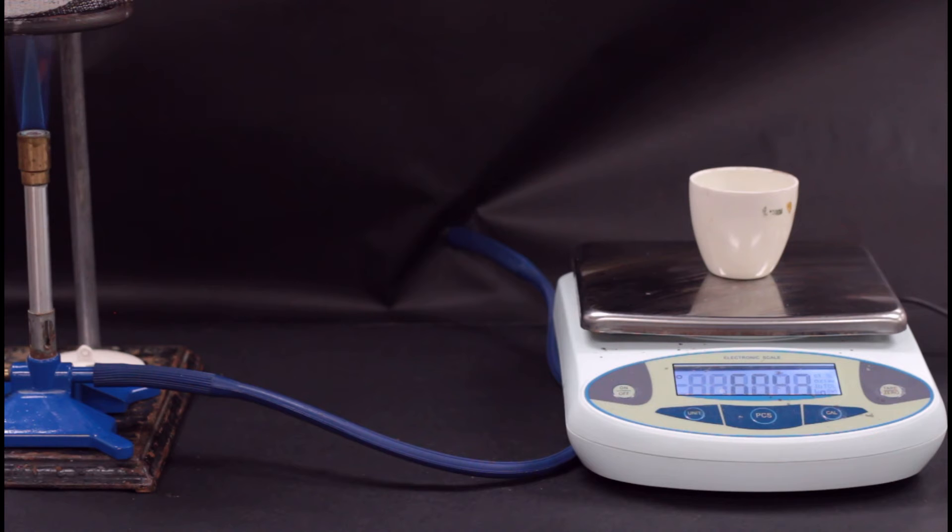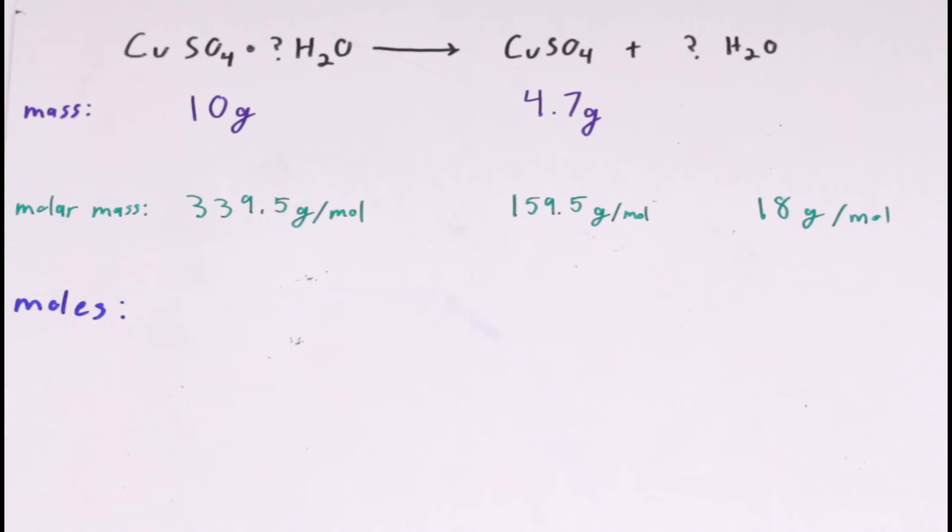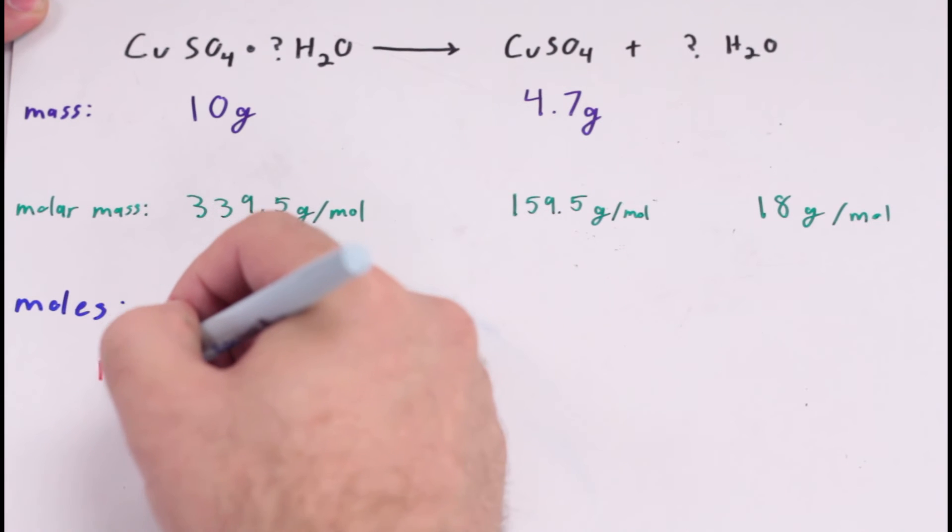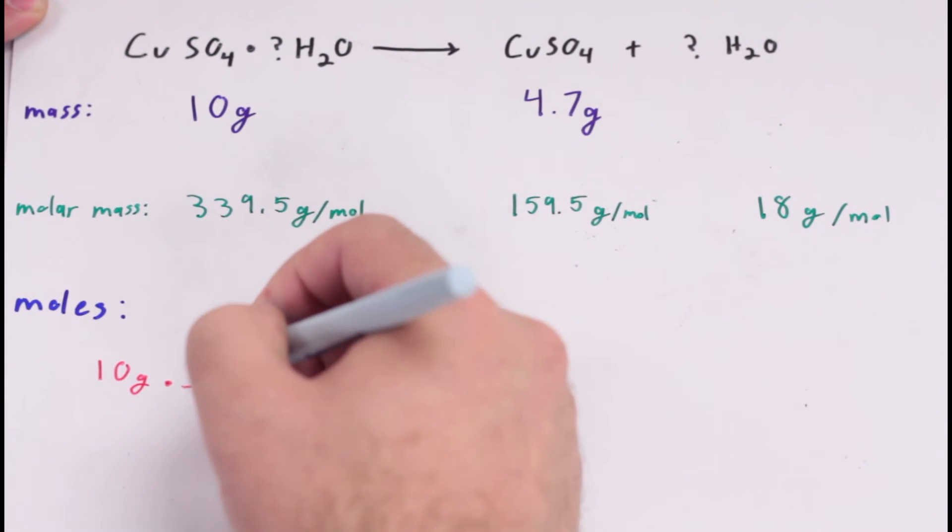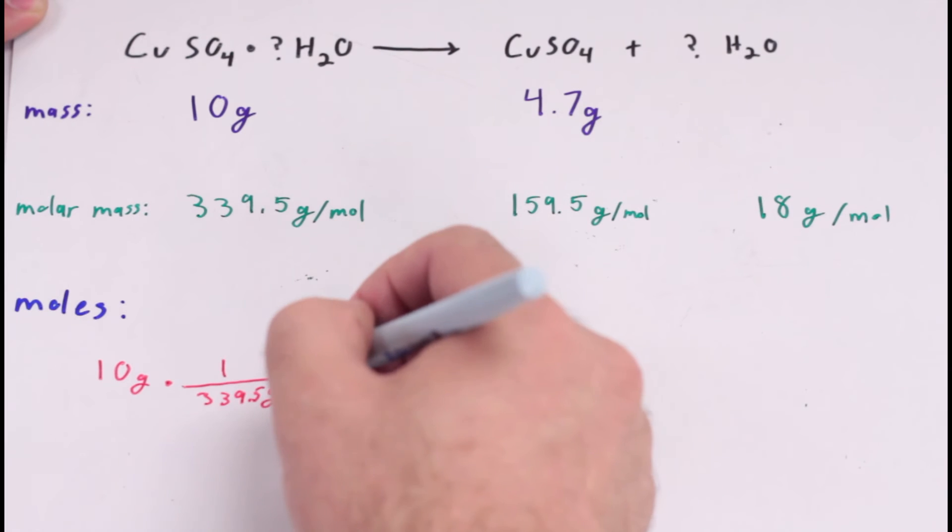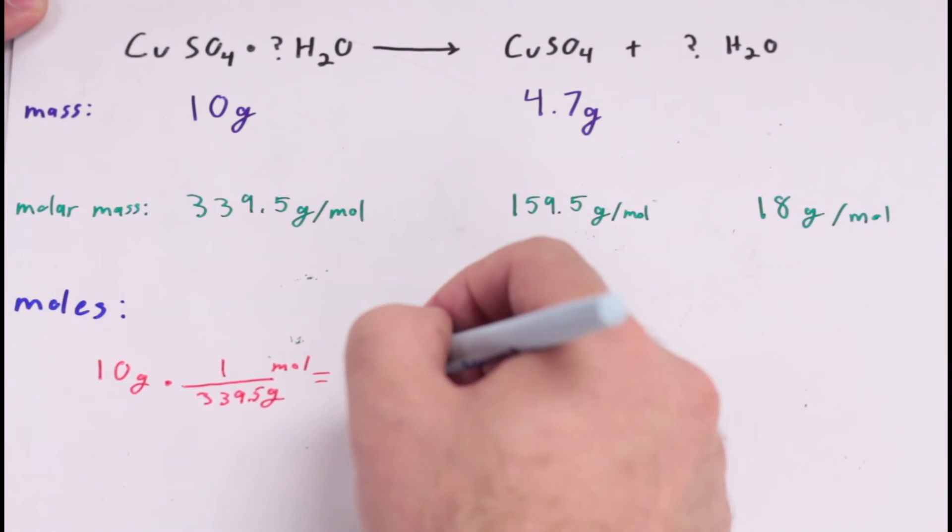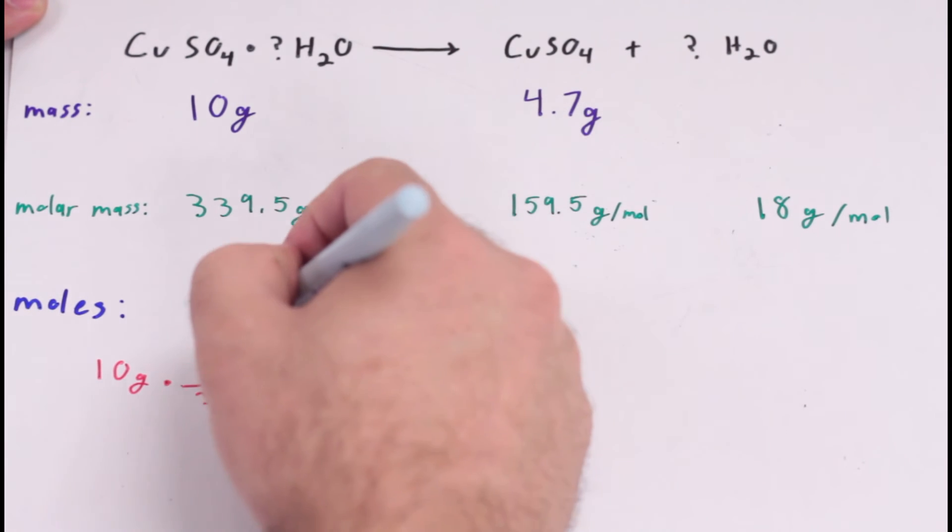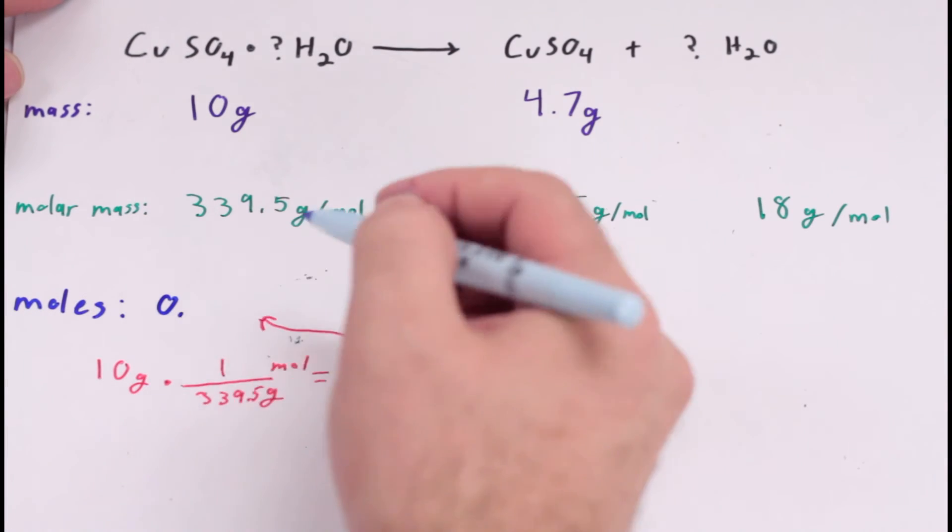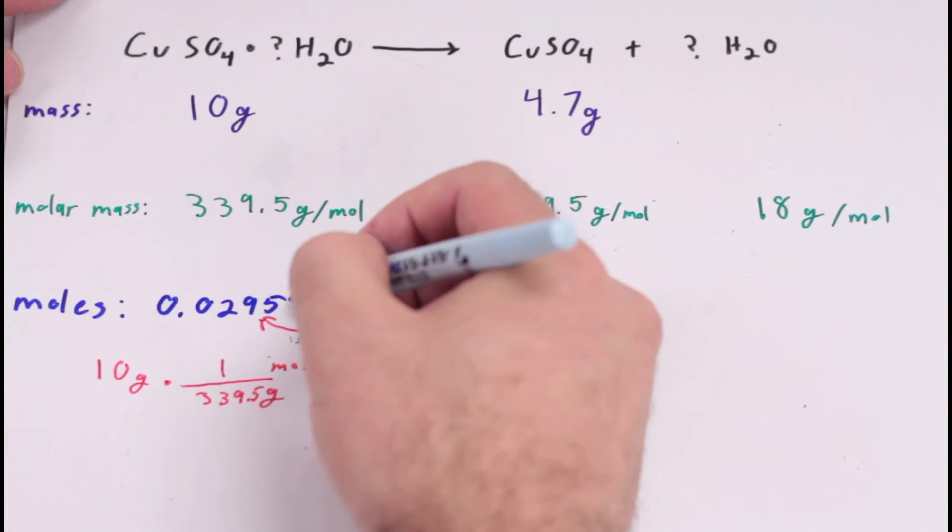Write down your final mass, then subtract the weight of your crucible. This is the mass of your copper sulfate now that all of the water has been removed. Notice the color change. Next, subtract this final mass from the initial mass of your copper sulfate. The difference will be the mass of the water that left.